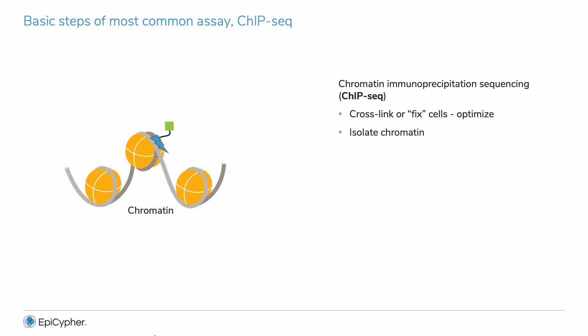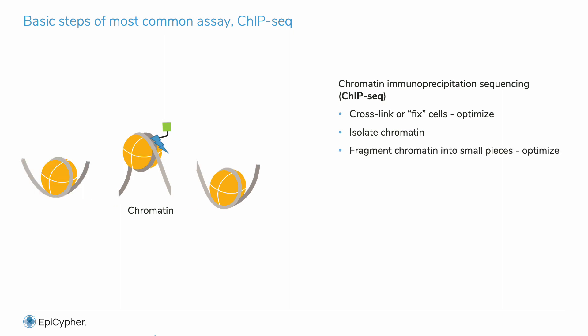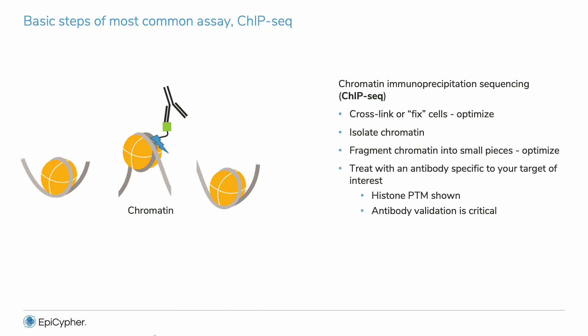You then lyse cells and isolate chromatin. The chromatin is fragmented into small mononucleosome pieces. Chromatin fragmentation is another challenging step to get right and also needs to be optimized for each cell or tissue type. After fragmentation, add an antibody to the target of interest, which binds nucleosomes containing your target.